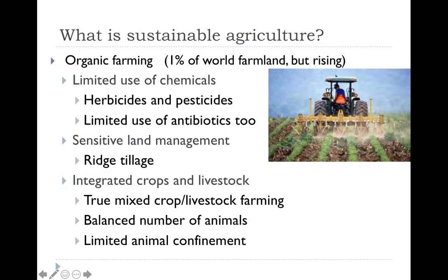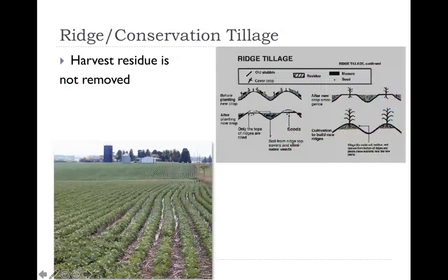That's why once in a while there'll be outbreaks — a salmonella poisoning at a Chipotle, for example. Cross-contamination can happen with organic farming. Here's ridge conservation tillage: the harvesting residue is not removed, so you've still got all the old crop material, and they just till it all up and plant the new crops on top. That's kind of a way of using natural fertilizer and it also protects the ground.